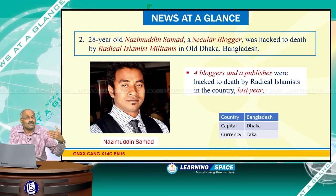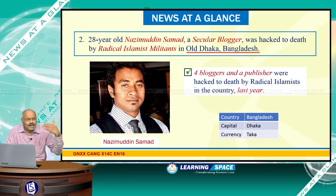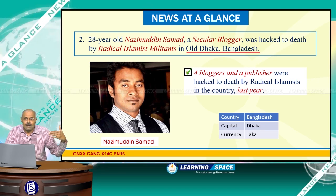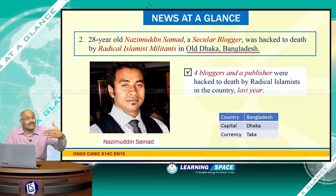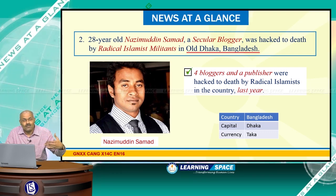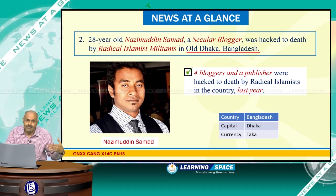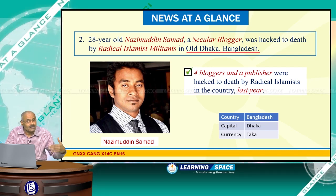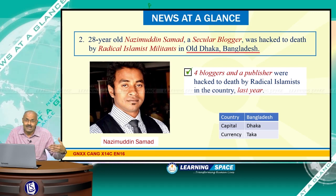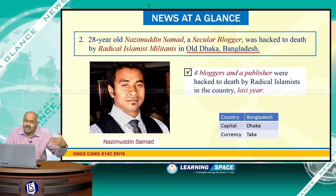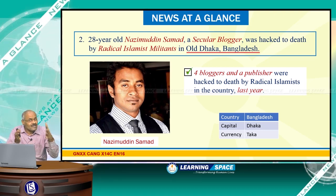28-year-old Nazim Uddin Samad, a secular blogger, was hacked to death by radical Islamist militants in Dhaka, Bangladesh. Last year, four secular bloggers and a publisher were hacked to death by radical Islamists in the country. In Bangladesh, the liberation war took place in 1971, and after a gap of around 39 years, in 2010, the Bangladesh government constituted a crimes tribunal, sentencing several persons of Jamaat-e-Islami to either life imprisonment or death penalty.